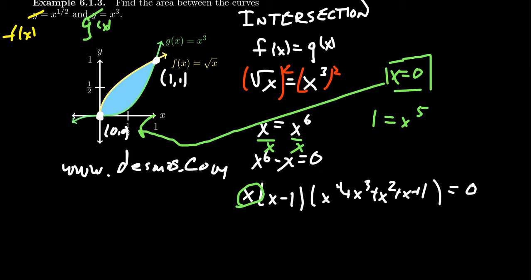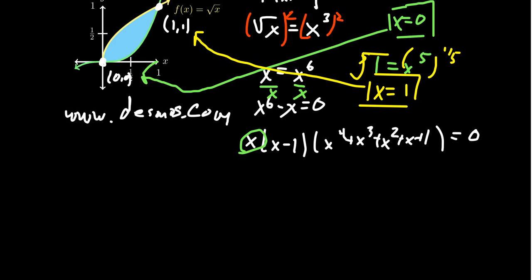X equals zero. And then if you have one equals x to the fifth, we'll take the fifth root of both sides. And you're going to see that x equals one is the other real solution. And that's going to correspond to this one right here. So we found our bounds x equals zero and x equals one. It takes a little bit more effort to find them because it was implicit with the description. But once we have it, we're ready to go.